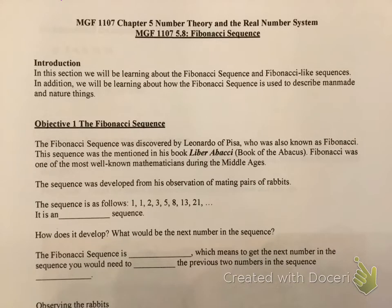Hi guys, this is section 5.8, the Fibonacci sequence. This and the next section are actually one of my favorite sections to talk about in MGF 1107 Liberal Arts. Hopefully you share my sentiment because I think it's pretty neat. We're going to be looking at the Fibonacci sequence and Fibonacci-like sequences, and we're going to be learning about how the Fibonacci sequence is used to describe man-made and natural things.